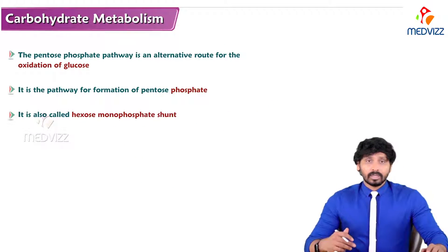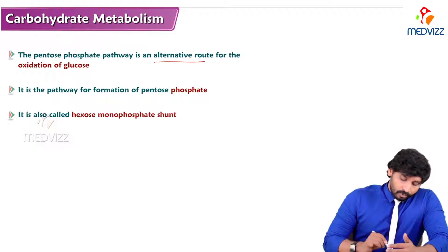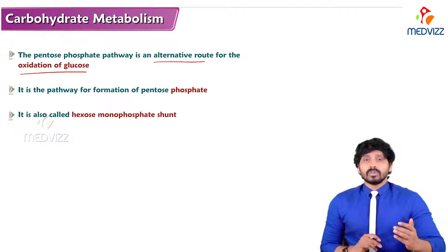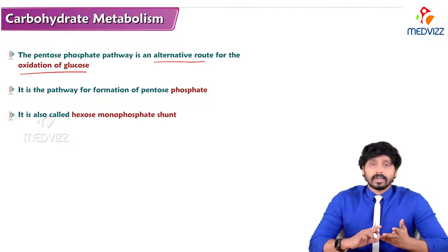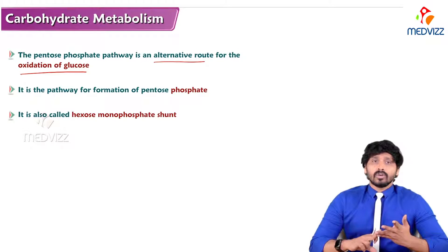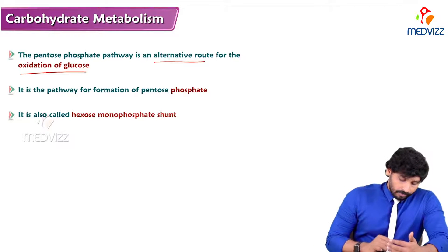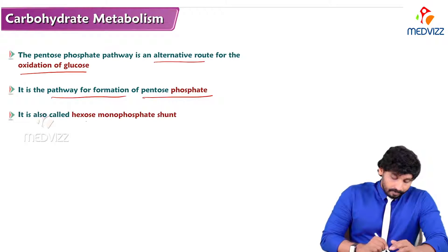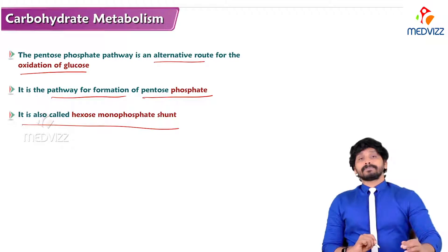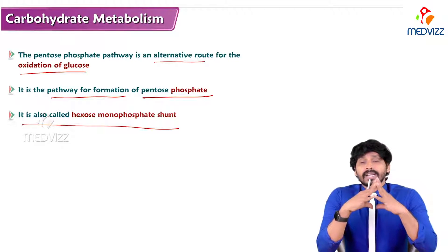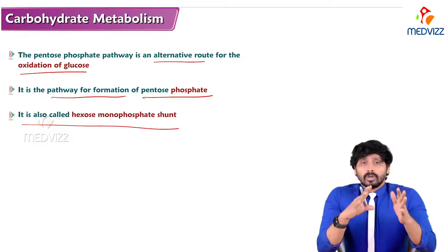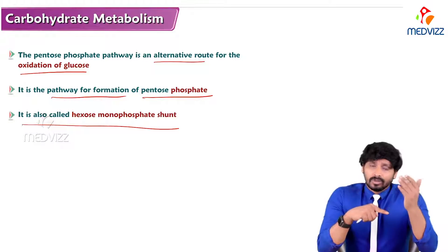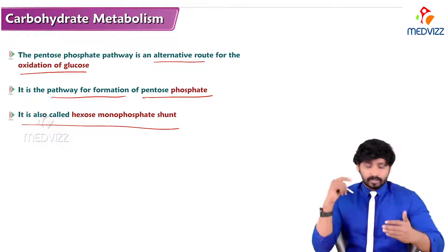The Pentose Phosphate Pathway is an alternative route for oxidation of glucose. The major routes for oxidation of glucose are glycolysis and the TCA cycle, which we have seen in previous videos. This pathway is also a route for formation of pentose phosphates. Its key significance includes oxidation of glucose, production of pentose phosphates, and production of NADPH.